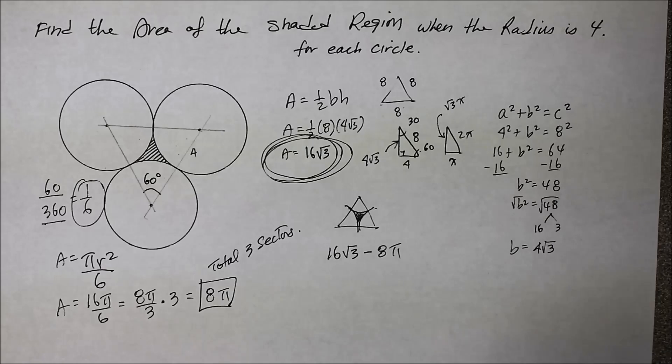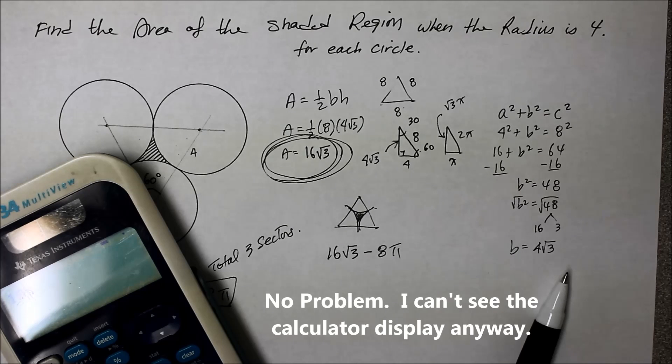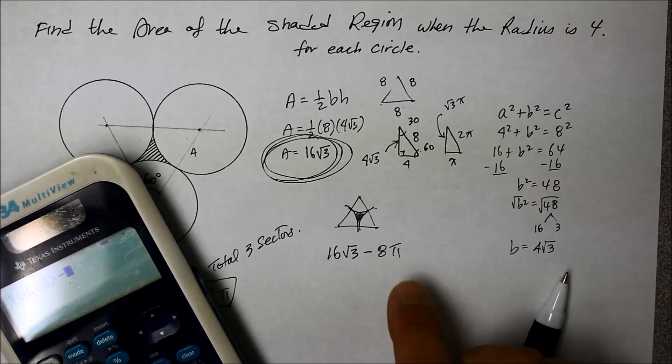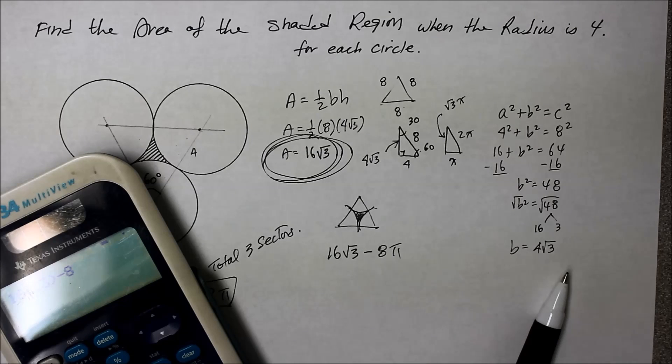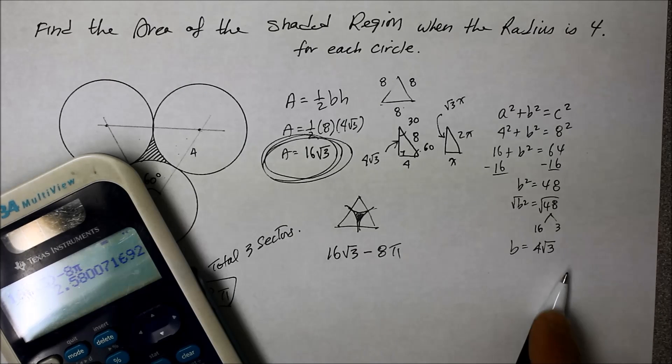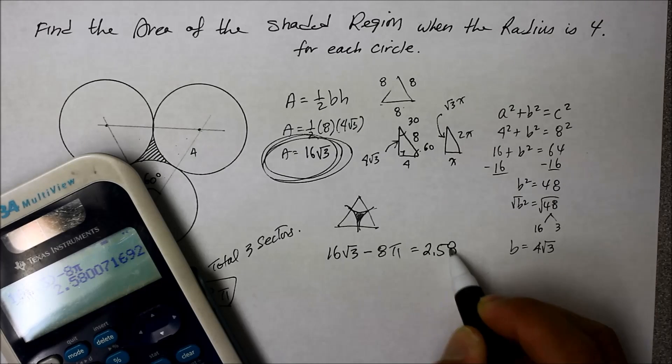Take it away. So the area of a triangle was 16 square root of 3 minus 8 pi. Hopefully you have a calculator, right? So in this case, we're going to say 16 square root of 3, close parentheses. Whoops. 16 square root of 3, close parentheses. And we're going to take away 8 pi. Let's see if the calculator recognizes that.